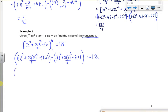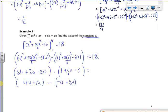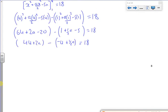All of that gives me a value of 18. What have I got here then? So that's 64. That's going to be 2a. That's going to be 20. So that's going to give me 44 plus 2a in there. That's a 1. That's a half a. That's a minus 5. That's going to give me minus 4 plus a half a. All of them are equal to 18.